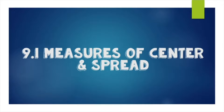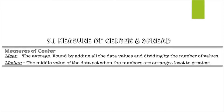Welcome to the 9.1 Measures of Center and Spread video. The two major vocabulary words you need to remember are mean and median — the two ways to measure the center of data. Mean is the average. The saying is 'my mean teacher makes me add them up and divide,' so you add up all the numbers in the set and divide by the number of data values you have.